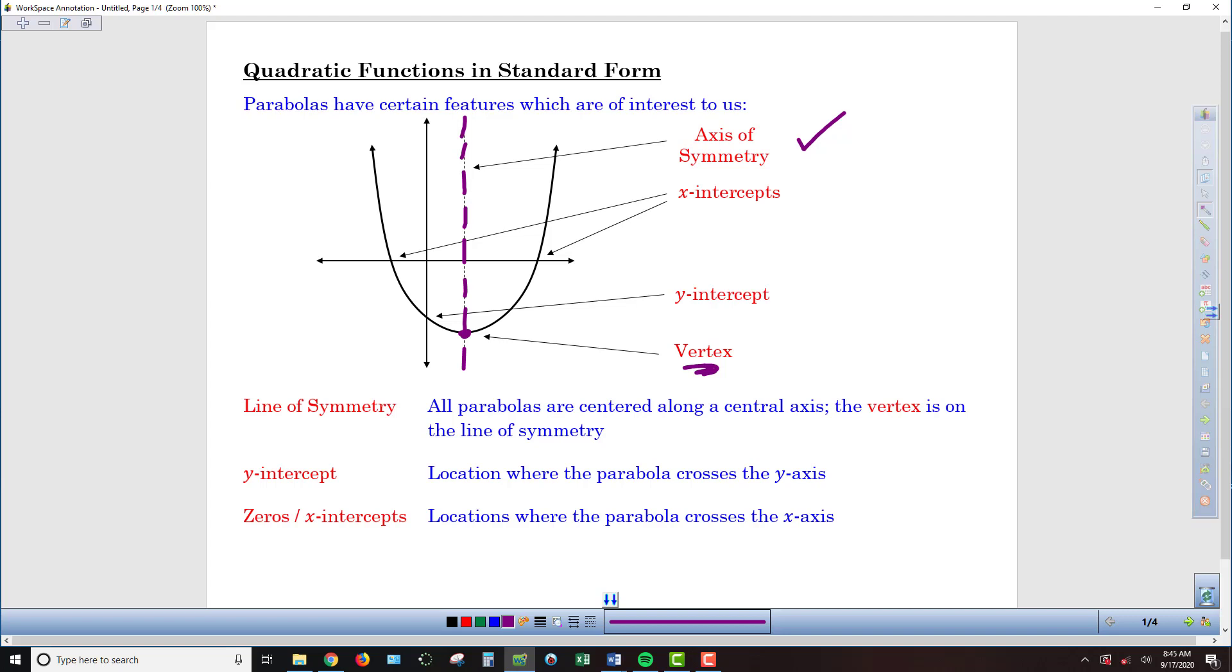The vertex is always located on that axis of symmetry. Also of interest to us are the x-intercepts, the places where the graph crosses through the x-axis, and the y-intercept, where the graph crosses through the y-axis.